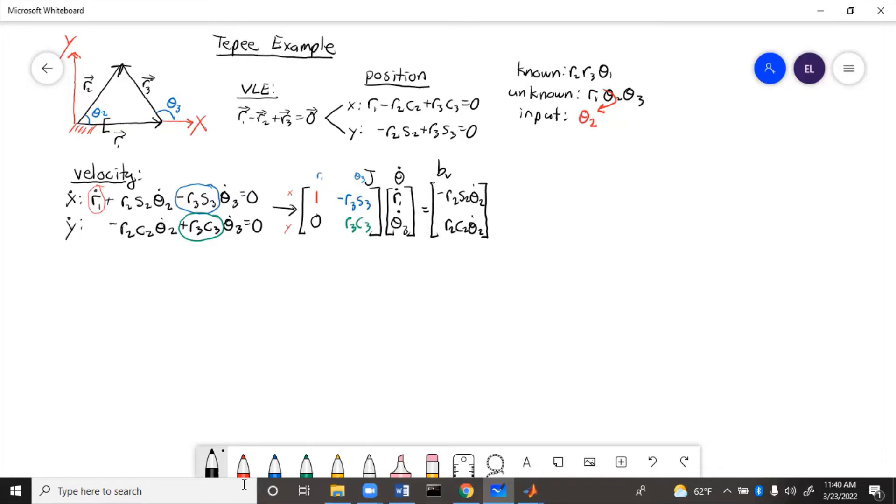Now there are two or three ways we could actually solve out for these velocity unknowns. So one method is algebraically. We use that for simple equations when there are zeros in the Jacobian, so that's what we'll use for this problem. The second one is Cramer's rule.